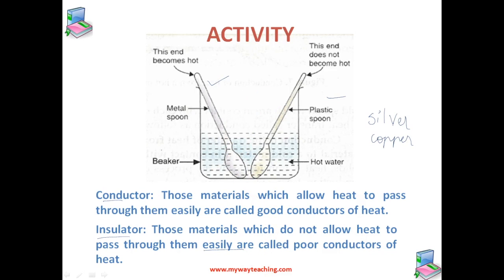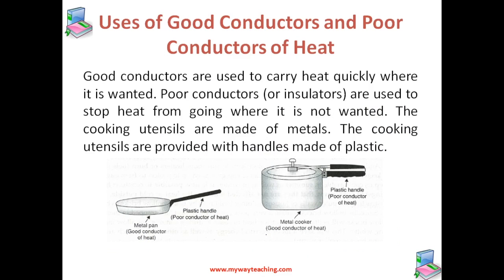Insulators are those materials which do not allow heat to pass through them easily, so we call them poor conductors of heat. Examples include plastic, straw, sawdust, glass, fiberglass, water, and air. In general, liquids are poor conductors whereas gases are very poor conductors of heat. Air is a very good insulator of heat. Materials that trap air are excellent insulators of heat. If one end of a poor conductor material is heated, the other end does not become hot — it remains almost the same or becomes only slightly warm.